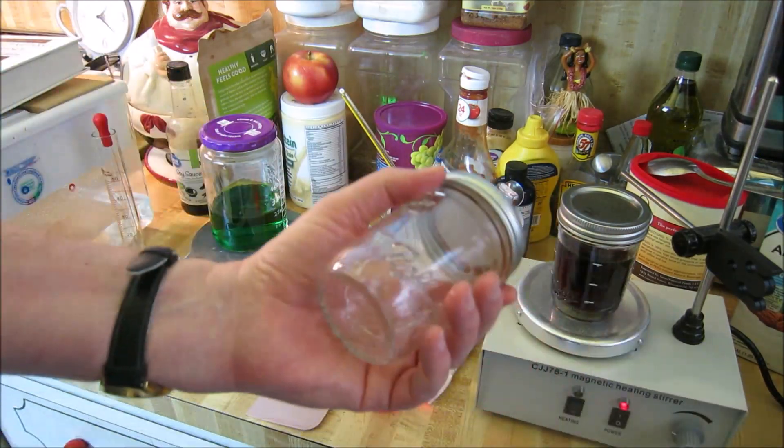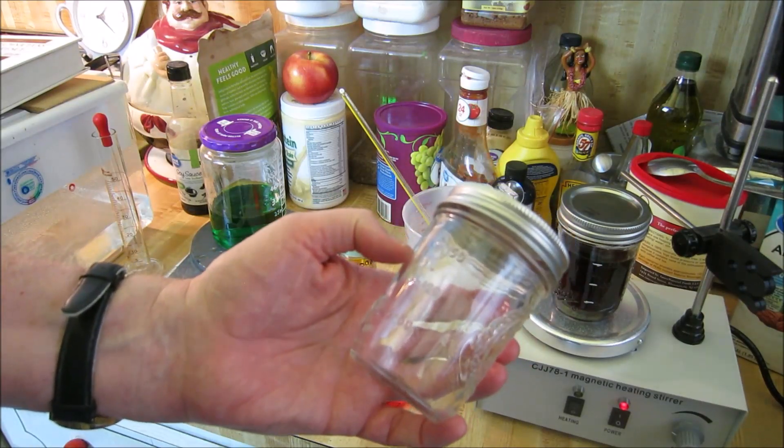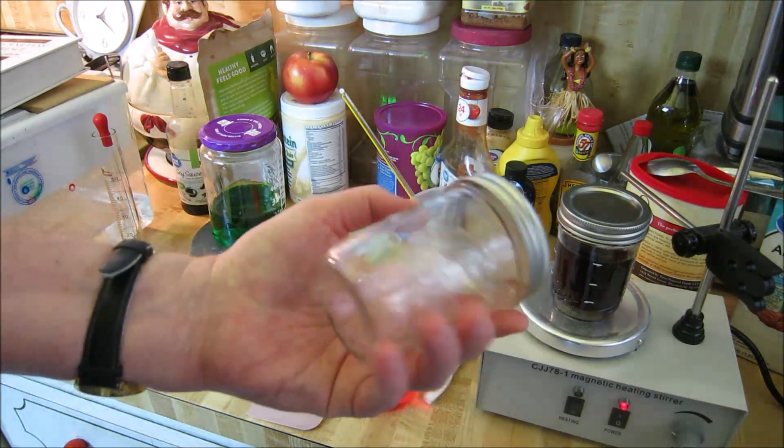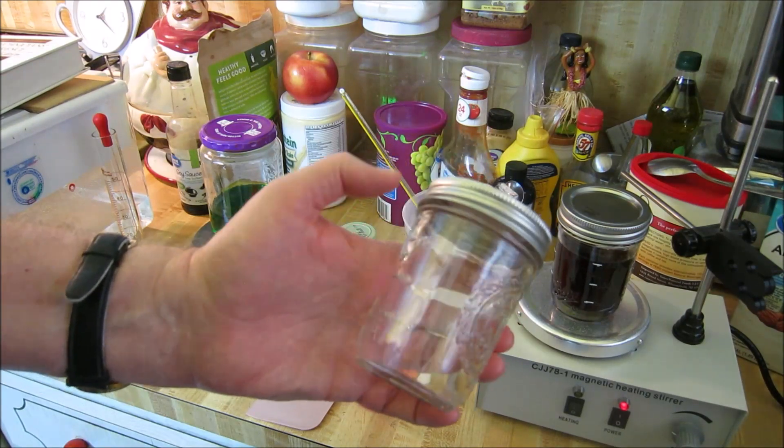So the second thing I want to talk about in the video was that I measured the volumes with the markings on the ball canning jars and they were very accurate. I was surprised. I figured they'd be off a bit.